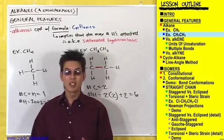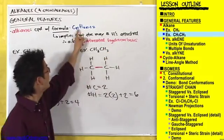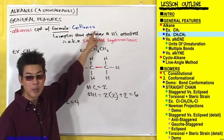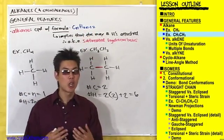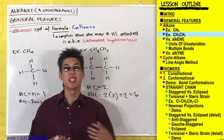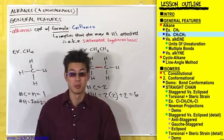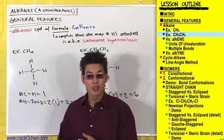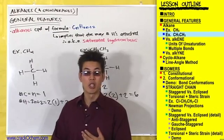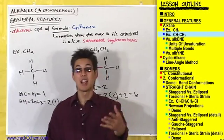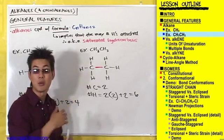Defining an alkane as a saturated hydrocarbon with general formula CnH2n+2 doesn't mean much until you compare it to hydrocarbons that are unsaturated — that don't have as many H's attached to the carbons as possible. That's why we define alkanes like this: so we can compare them to unsaturated hydrocarbons like alkenes and alkynes.